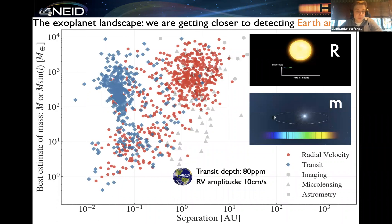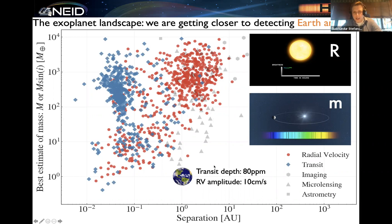To calibrate everyone on the precisions involved, the transit depth of Earth around the sun is on the order of 80 parts per million, and the radial velocity amplitude of the sun due to the Earth is on the order of 10 centimeters per second. With respect to photometric precisions, we have been able to obtain these from space with precision photometers such as Kepler. It's only relatively recently that we were able to obtain these photometric precisions from the ground. And with respect to radial velocities, over the last decade or so, we've been stuck at the so-called one meter per second radial velocity barrier.